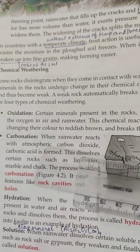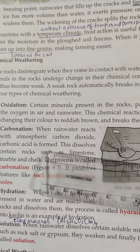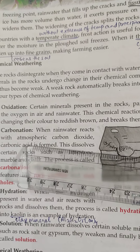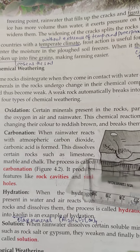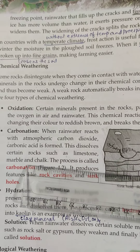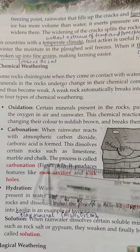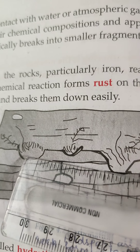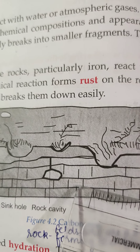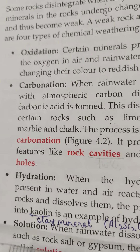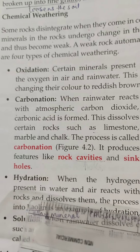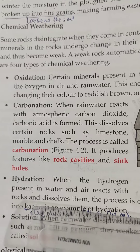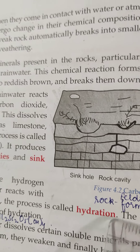Carbonation: when carbon dioxide reacts with rainwater, it forms an acid known as carbonic acid. This acid can dissolve certain rocks like limestone, marble, and chalk. Sometimes it can also form rock cavities and sinkholes in the rocks. Hydration: when hydrogen present in the air reacts with the rocks, it can also dissolve certain rocks. This process is called hydration.